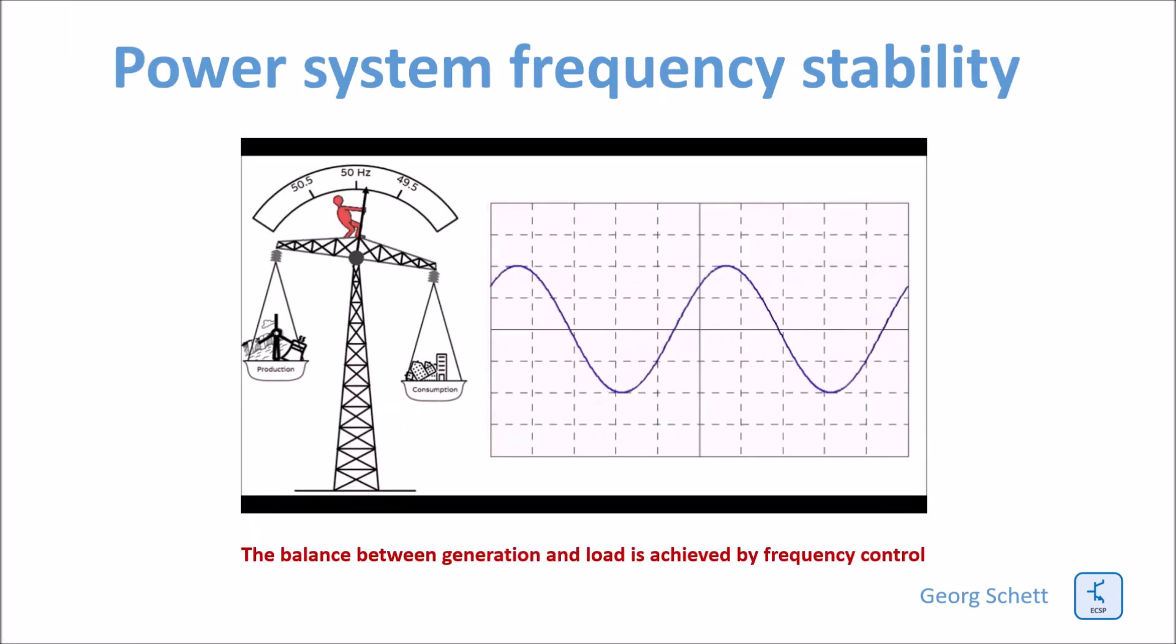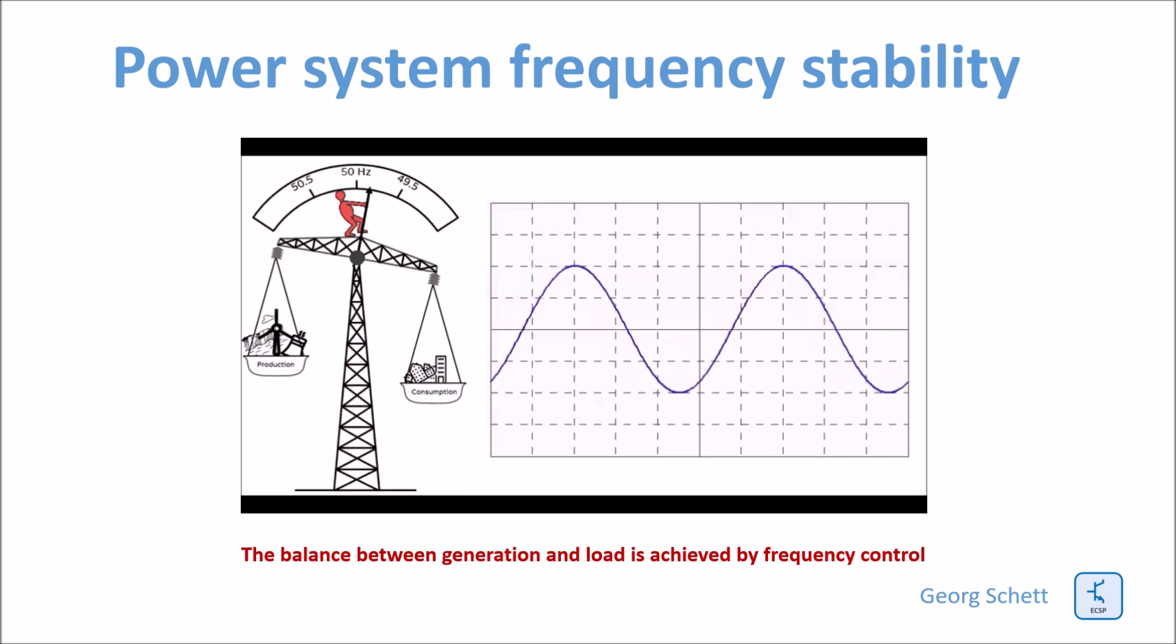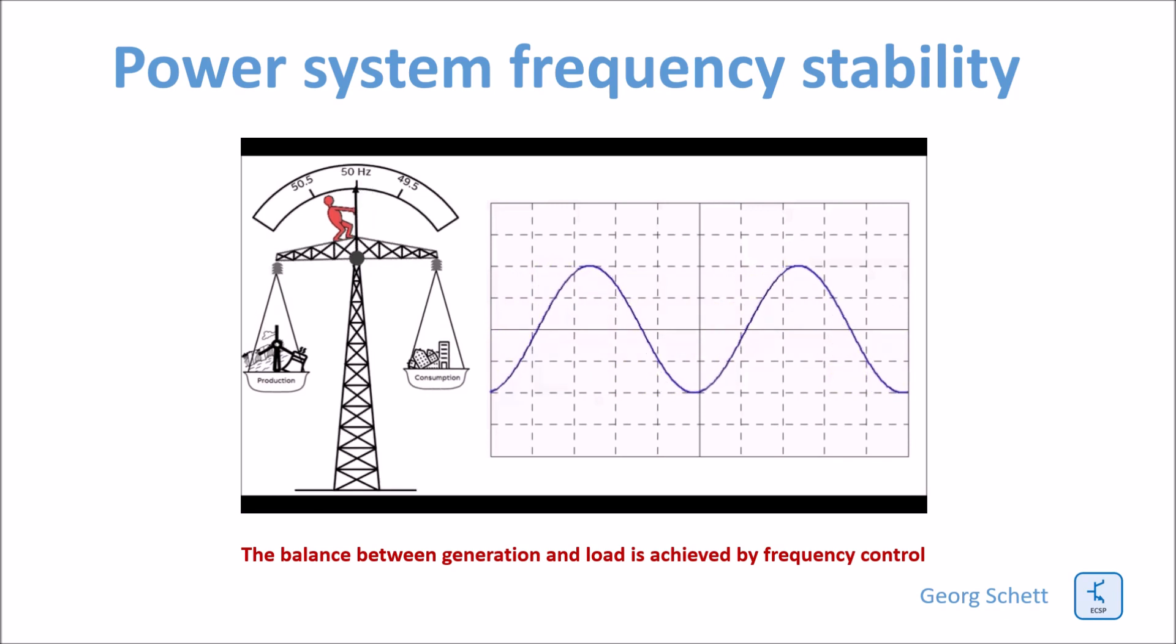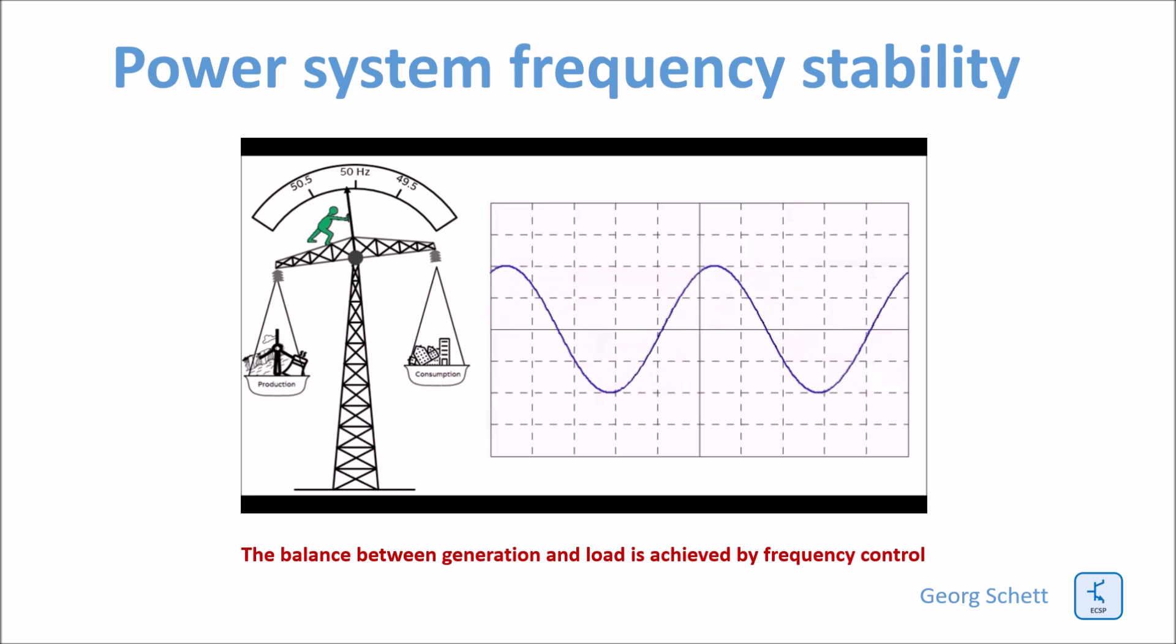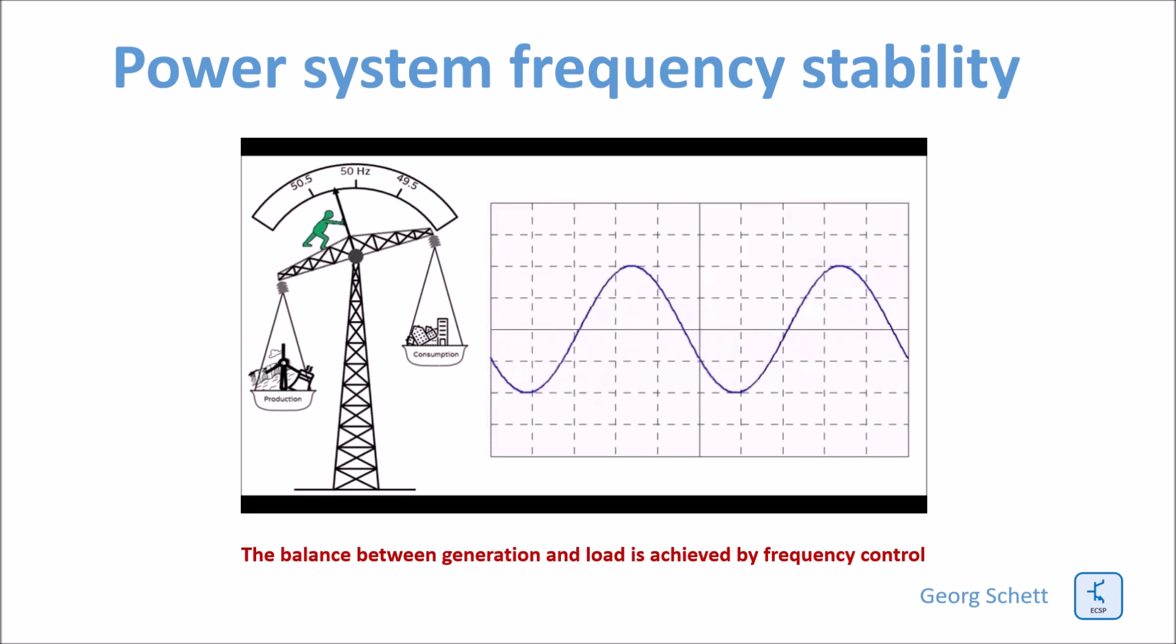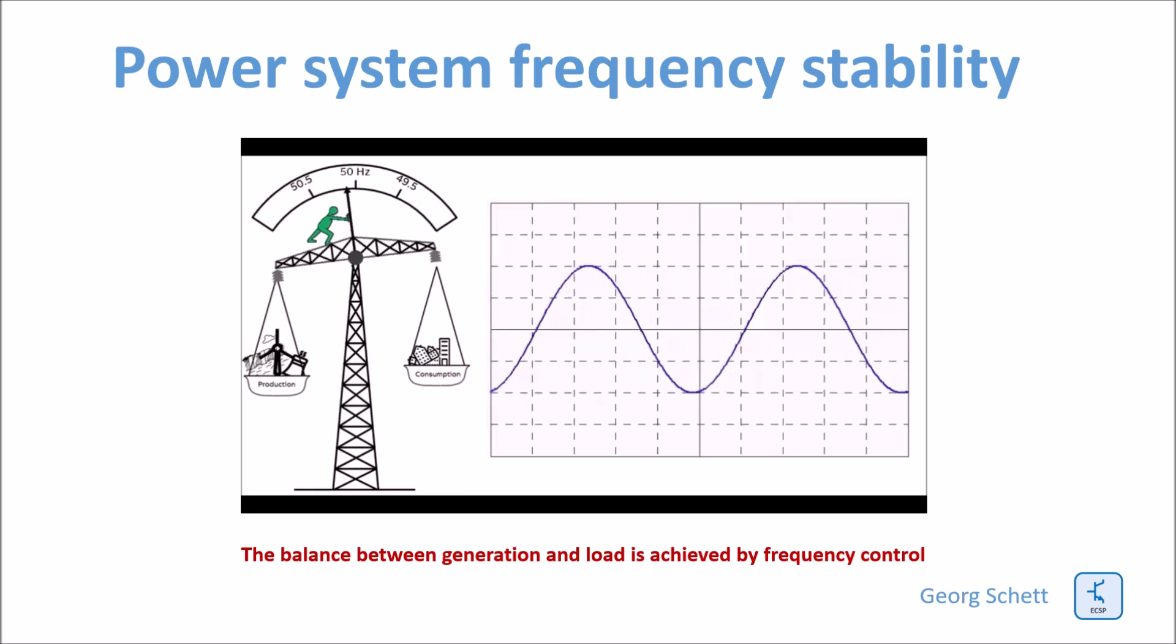If the load exceeds the power supplied by the generation, the system frequency will be slowed down and vice versa. It is like a car where the force of the brakes exceeds the torque of the motor.